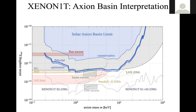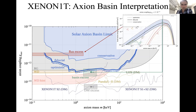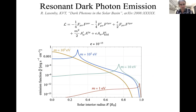Q: Are there prospects for future experiments? A: XENON claims their exposure will improve six to sevenfold — 6 tonnes instead of 1 tonne — with background reduced by a factor of three. The signal goes as the fourth power of the coupling, so the improvement is not very rapid with exposure.